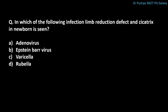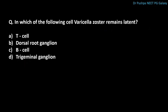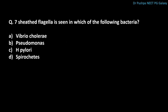In which infection are lymph node reduction defect and cicatrix seen in newborns? The correct answer is Varicella. In which cell does varicella zoster remain latent? The correct answer is the dorsal root ganglion. Which bacteria has 7 sheathed flagella? The correct answer is H. pylori. H. pylori has 7 sheathed polar flagella.